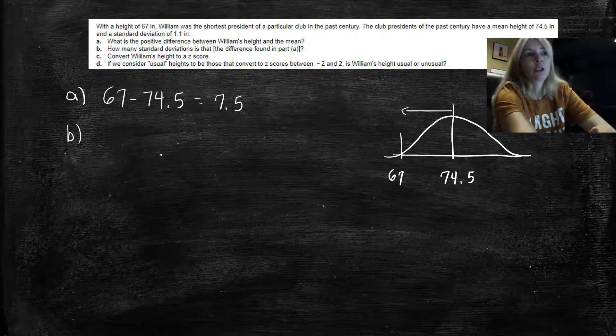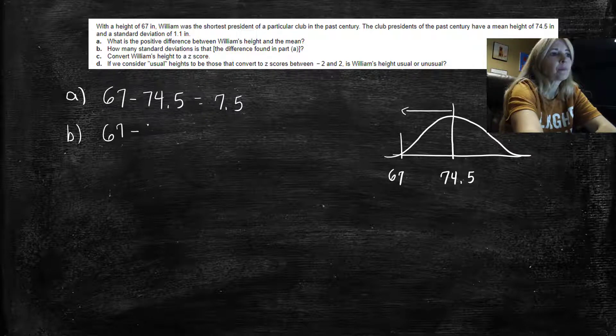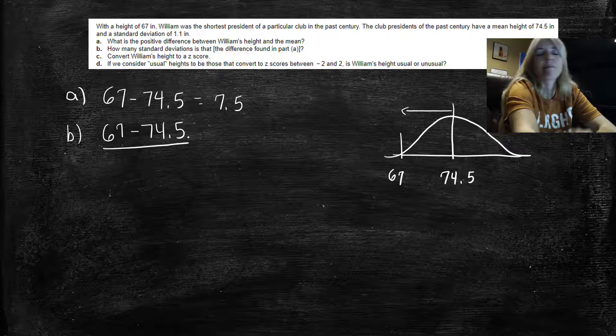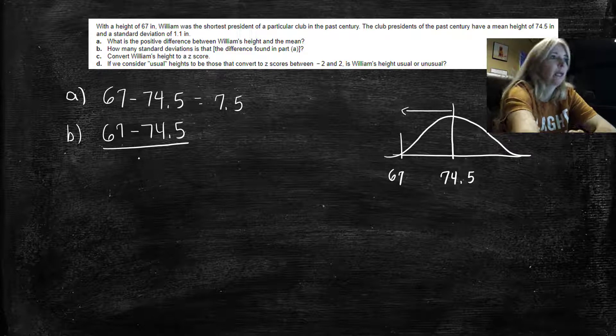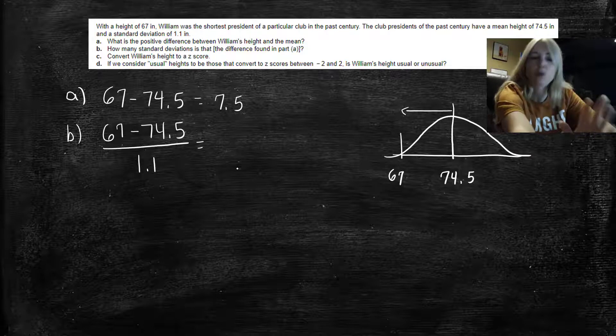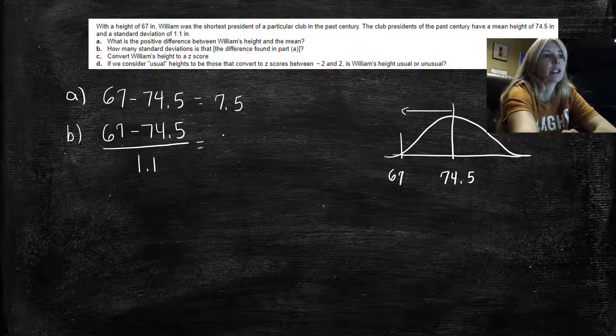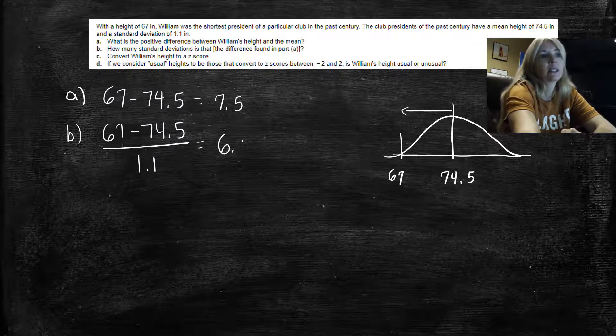Well, you're going to see that that's what's called a z-score. If I take 67 minus 74.5 and I divide it by the standard deviation, which is 1.1—if I absolute value this because it's wanting to know how many standard deviations—then I get 6.82.